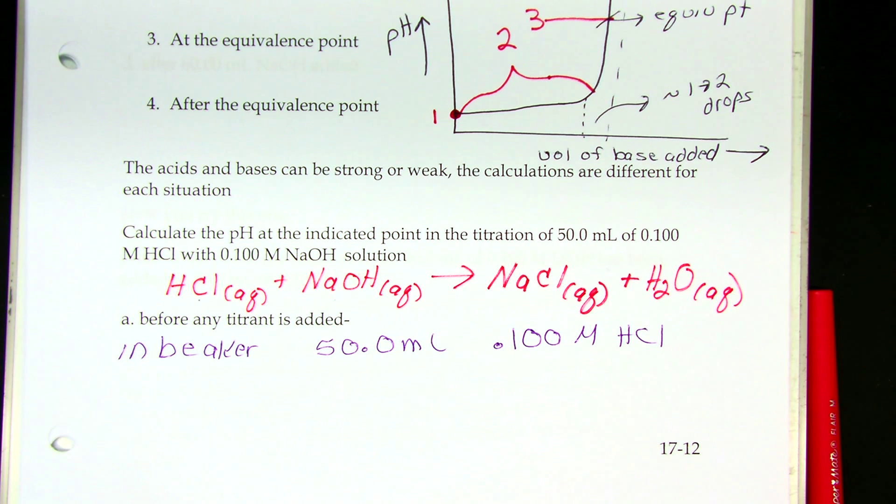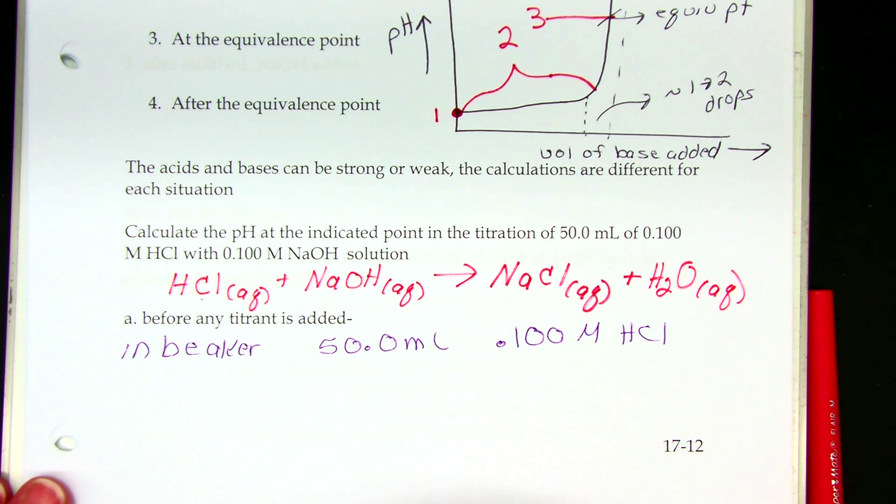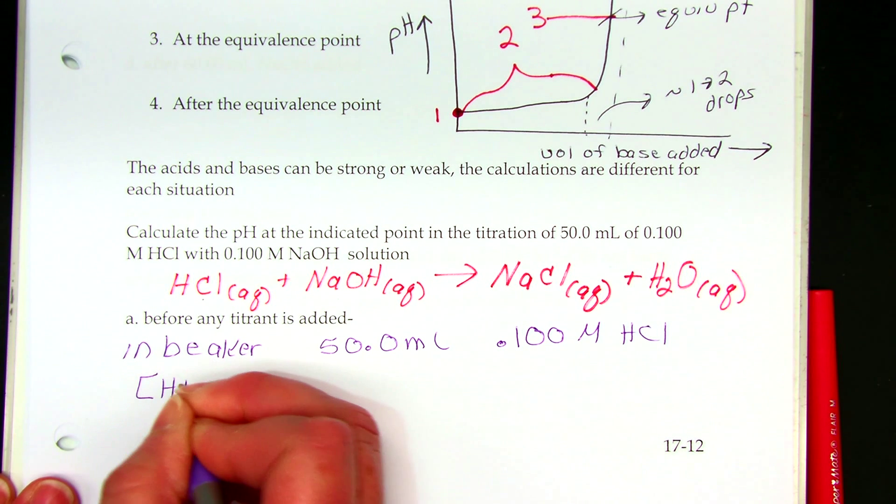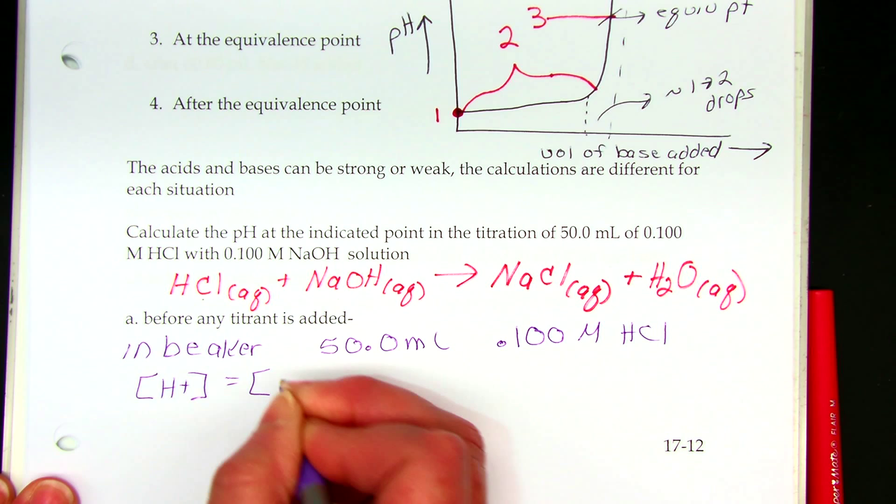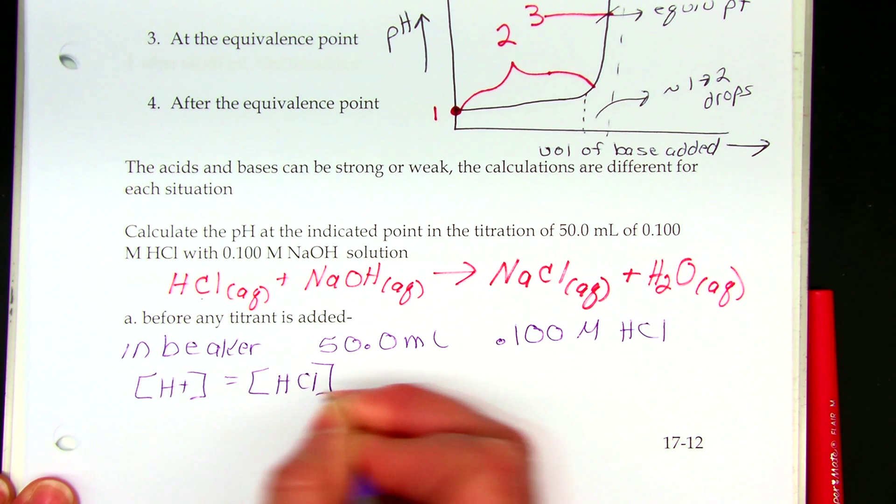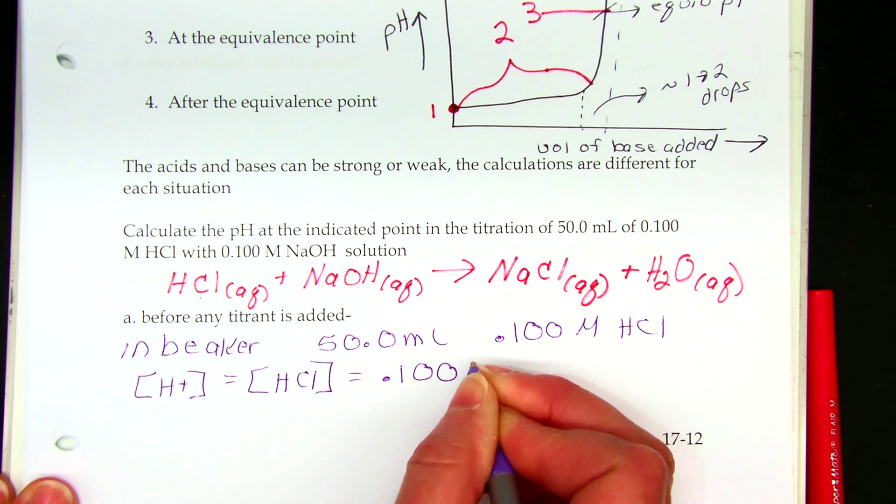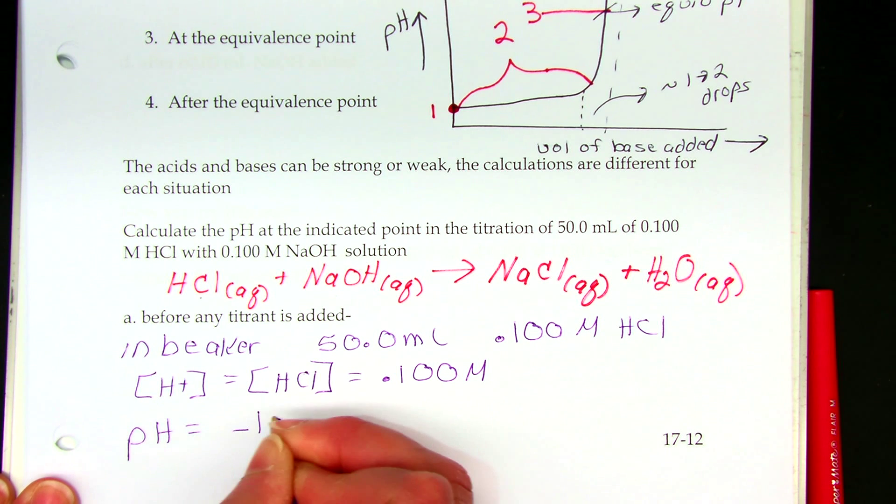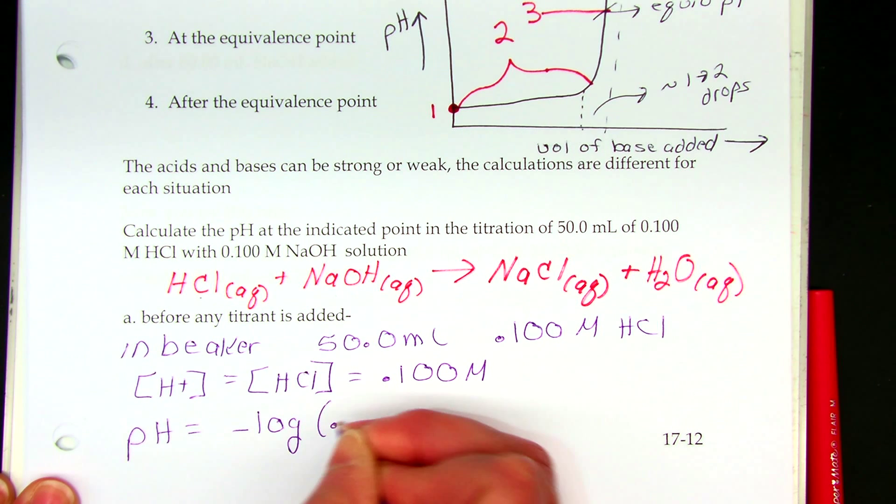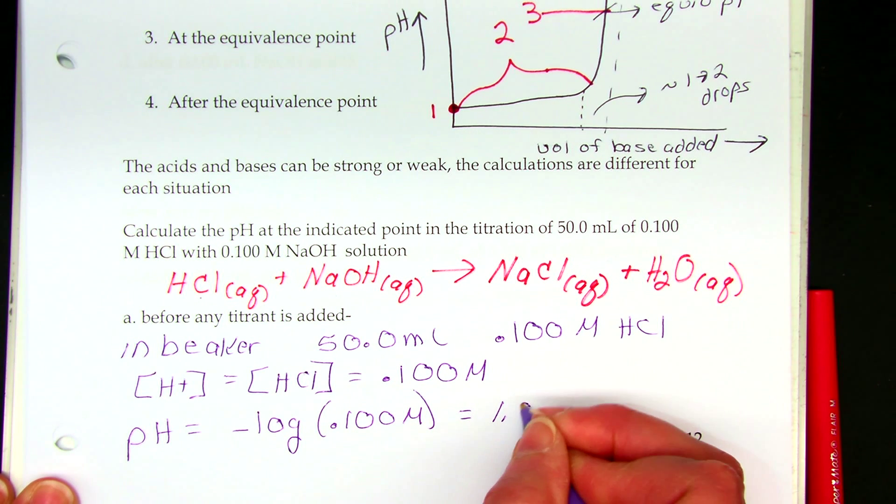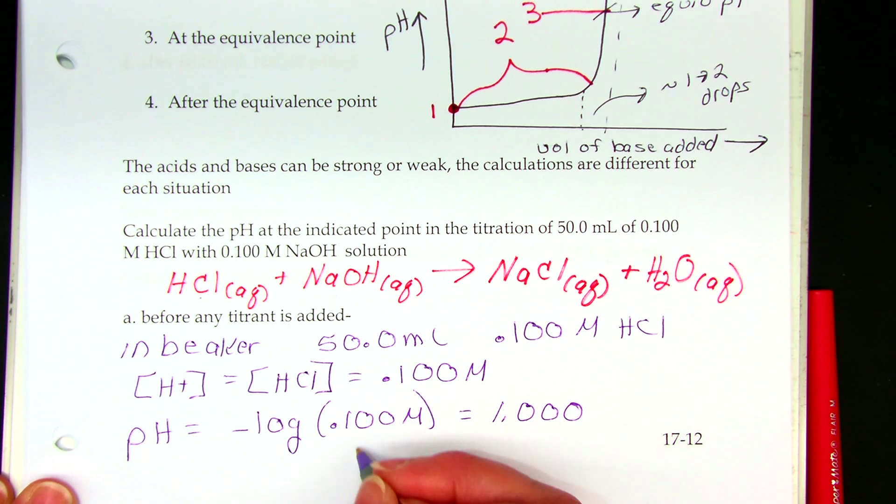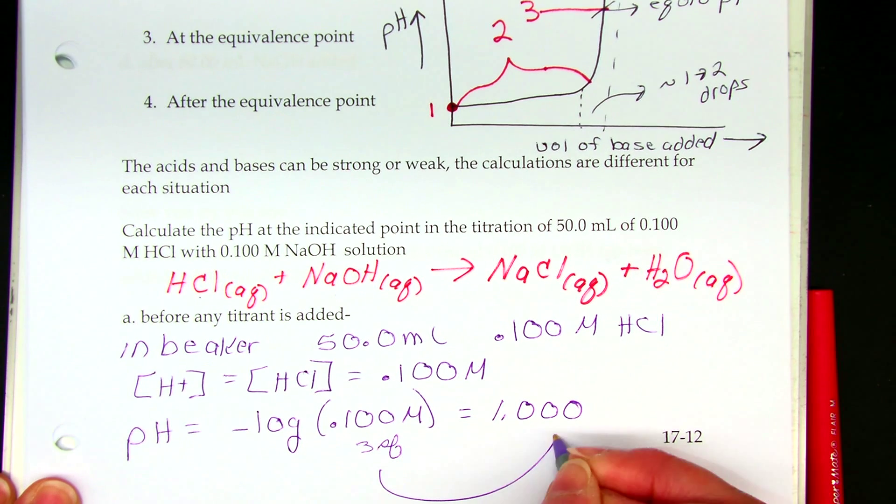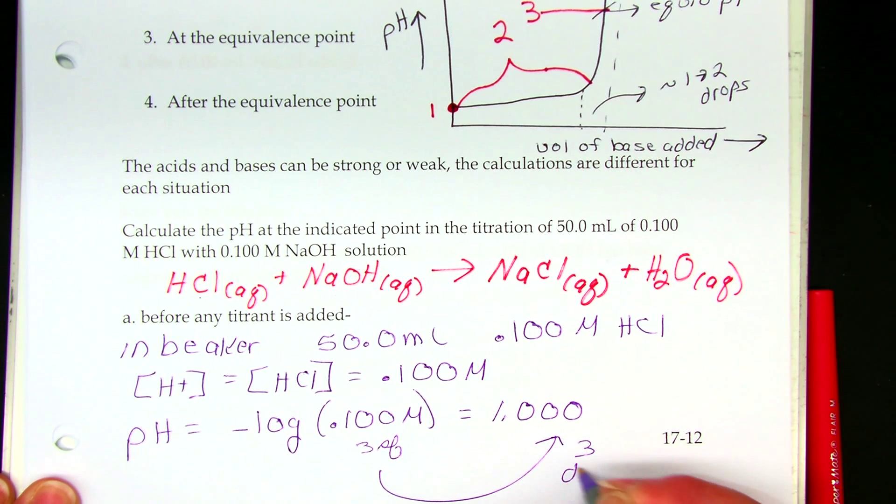So what's in my beaker is 0.1 molar HCl. HCl is a strong acid, so the hydrogen ion concentration is equal to the acid concentration is equal to 0.1 molar. So the pH is minus the log of 0.1 molar. I have three sig figs here, so the pH is equal to 1.000. Three sig figs gives me three digits to the right of the decimal.